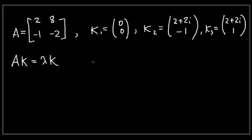This is not the only requirement in the definition of an eigenvector — the other requirement is that k cannot be a zero vector. Although the equation holds for any lambda when k is zero (since A times zero is zero), by definition we choose not to call a zero vector an eigenvector. So we immediately see that k1 is the zero vector, meaning k1 is not an eigenvector.